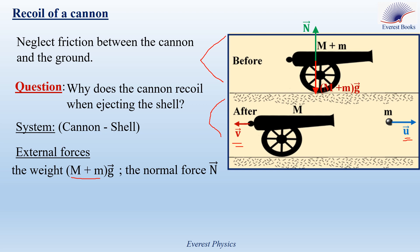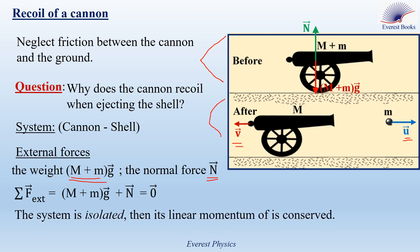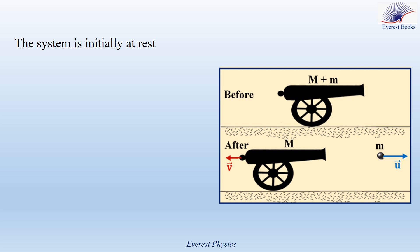The shell and the cannon move horizontally, and the external forces are vertical forces, so their sum in the horizontal direction is zero. Therefore, our system is an isolated system and its linear momentum is conserved. So P_system initial equals P_system final. The system is initially at rest, so the linear momentum of the system just before the ejection equals zero. Therefore, the linear momentum of the system just after the ejection is also equal to zero.